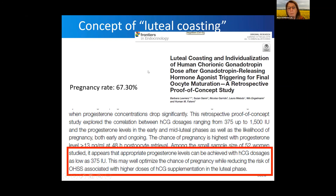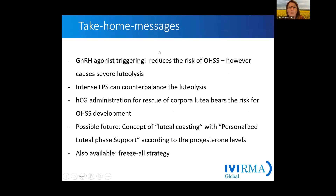The next step would be to develop an algorithm based on the level of progesterone and the number of oocytes retrieved to determine which hCG amount is necessary to achieve a sustained progesterone level. Unfortunately, we will not be able to follow this up because we are now mainly freezing embryos and doing frozen embryo transfer. What I want you to take home is that it's good to have the tool of a GnRH agonist trigger because we can reduce the risk for high-responder patients of developing the potentially life-threatening complication of ovarian hyperstimulation syndrome.